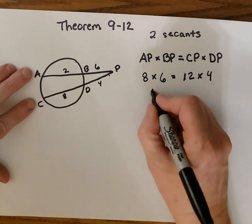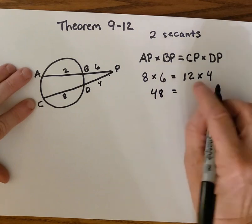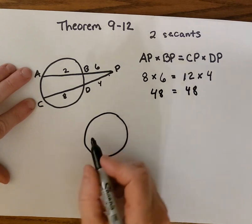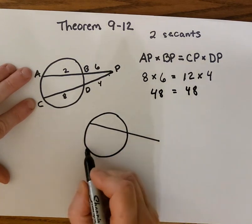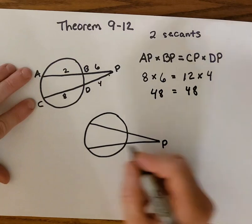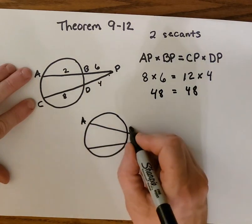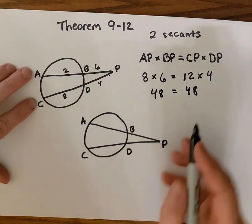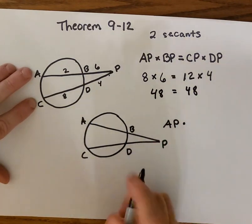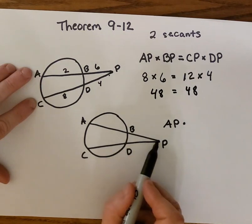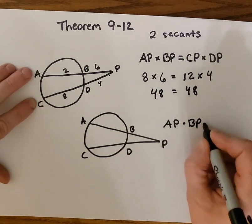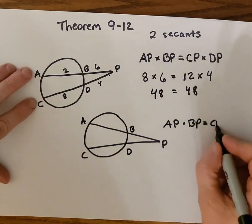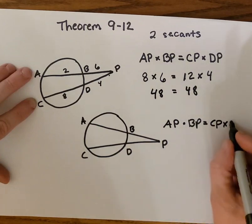Multiply by the external segment, which is 4. So 8 times 6 is 48 and 12 times 4 is 48. Theorem 9-12 says: when you have two secants meeting at a point outside of the circle, label them A, B, C, D — then the entire AP multiplied by the external segment BP equals the entire secant segment CP multiplied by the external part DP.